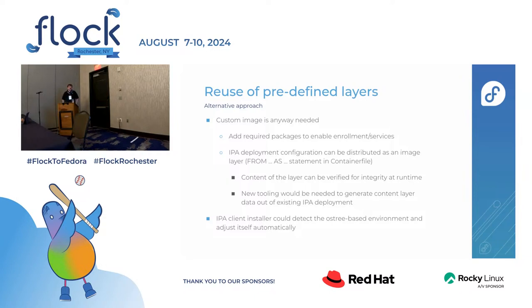The same installer also needs to continue working in mutable environments, in non-rpm-ostree environments. So it needs to detect which environment it is and adjust itself, maybe automatically. This is the part we'll have to figure out how it all connects together. As you can see, the traditional path still works, so there's not a big pressure on us.